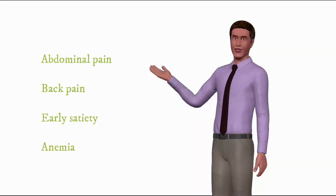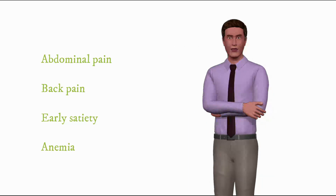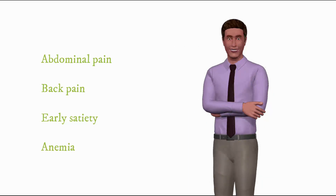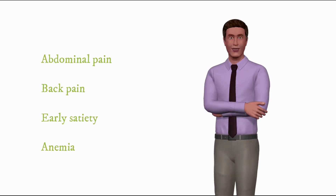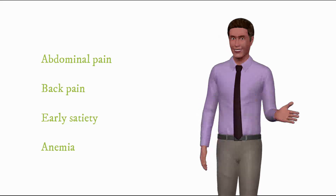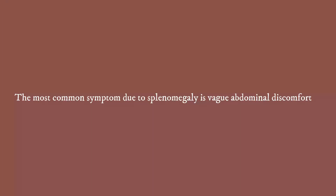Symptoms of splenomegaly may include abdominal pain, sometimes back pain, early satiety, and possibly anemia due to cytopenia. The most common physical symptom due to splenomegaly is vague abdominal discomfort.